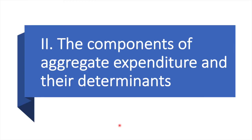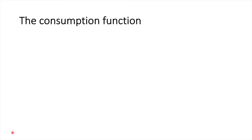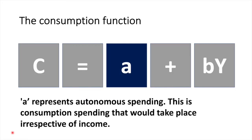The first component we're going to look at is consumption. Simply put, consumption is household spending on final goods and services. Consumption is the only component that we do not hold fixed — individual consumption alters with income. The formula for the consumption function is C equals A plus BY. A represents autonomous spending, which is consumption that would take place irrespective of income. If an individual had no income, they would still need to spend money to afford basic needs like food, shelter and clothing, funded either through spending their existing savings, borrowing money or from other sources.